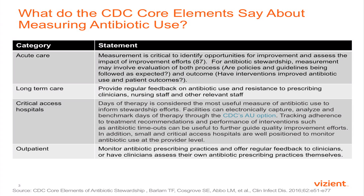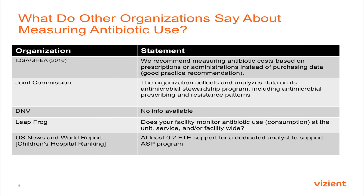All day the theme has been around the CDC core elements. What do they say about measuring antibiotic use? For each of the four core elements across different facility types, measurement is mentioned in each one. I noticed there's actually a lot of detail in the critical access hospital guideline around metrics — even more so than the acute care core elements — because we're learning more about how to track antibiotic use, and there are more mechanisms now through the CDC's AU option.